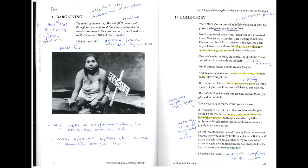Scene 16: Bargaining. The sound of hammering. The woman slams a nail through two pieces of wood, stands, and carries a wooden cross over to the grave. As she drives it into the red earth, the words 'for sale' are revealed. What is it worth?